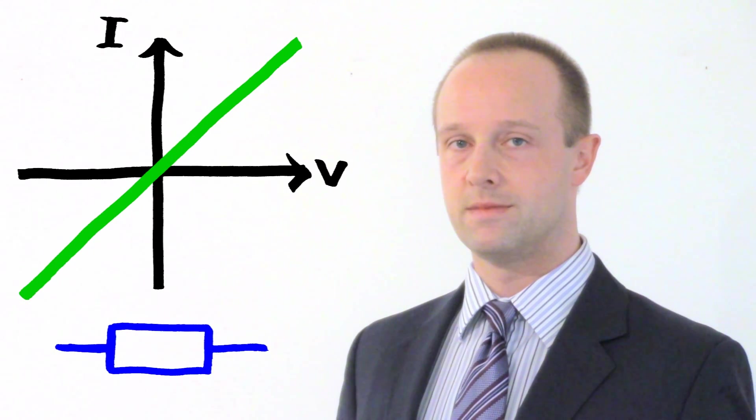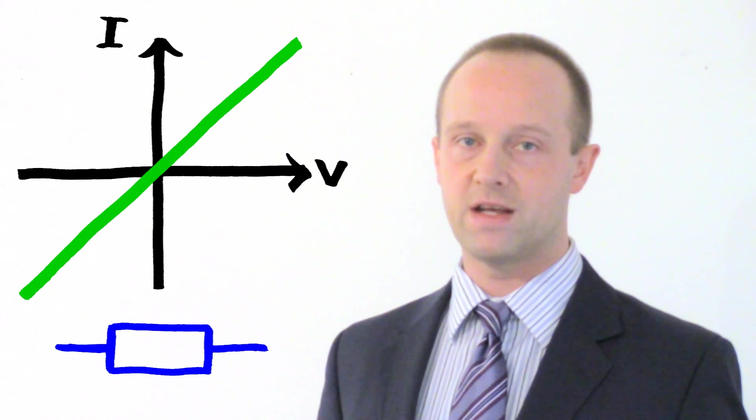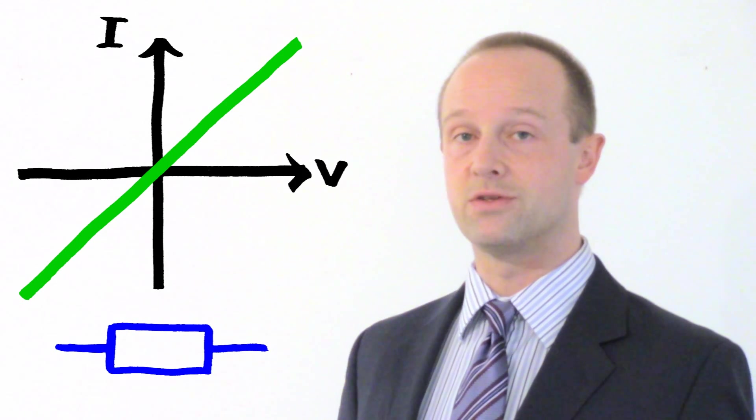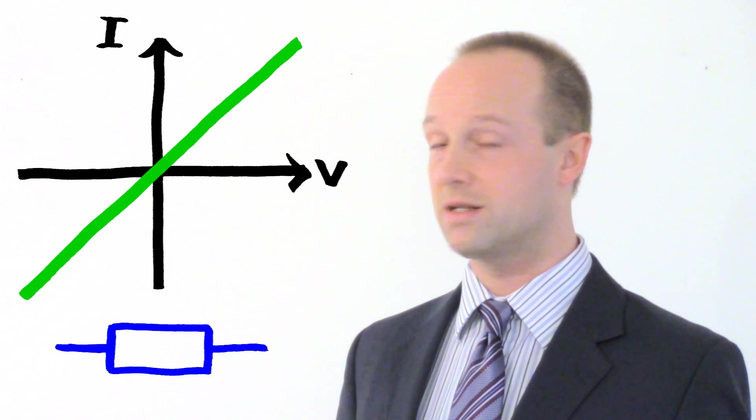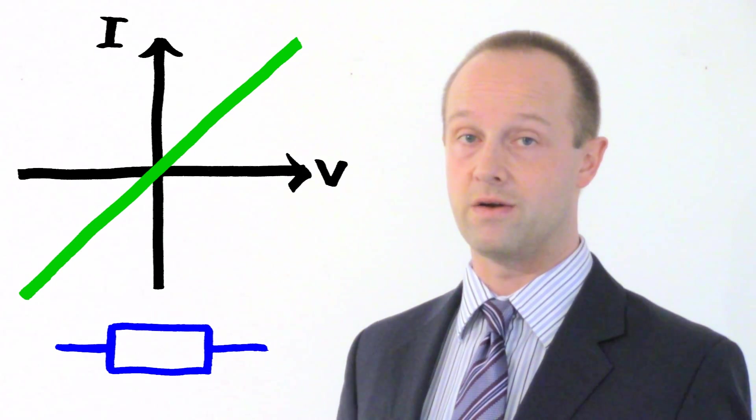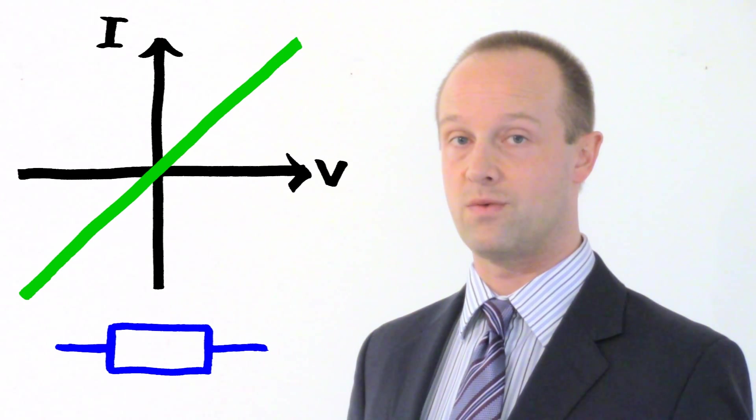So let's start out with the resistor. This is the easiest one. We get the graph like this. And all this means that for a fixed resistance at fixed temperature, as you double the potential difference, you double the current through it. If you triple the potential difference, you will triple the current through it. If you reverse the potential difference, you reverse the current through it.